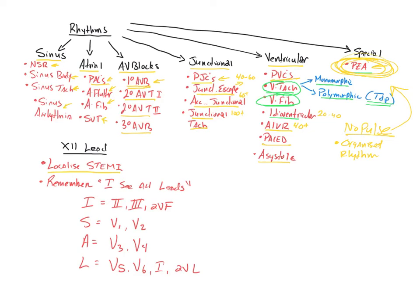Remember, I see all leads, right? This will help you. So look at the inferior leads first. These are leads 2, 3, and AVF, right? That's the inferior wall. Threshold ST-segment elevation in those leads indicates an inferior wall STEMI.